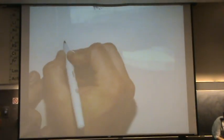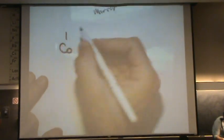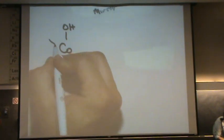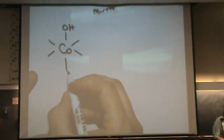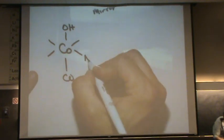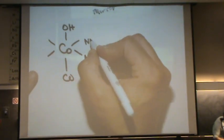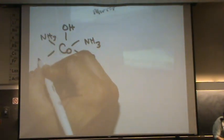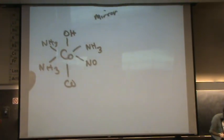If we draw this one out, let's put the cobalt in the middle. There's a couple ways I could draw this. I could go OH, I could do CO, NO, NH3, NH3, NH3, so I could do it like that.